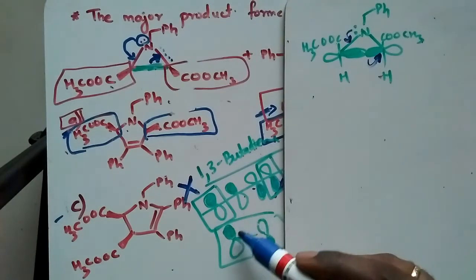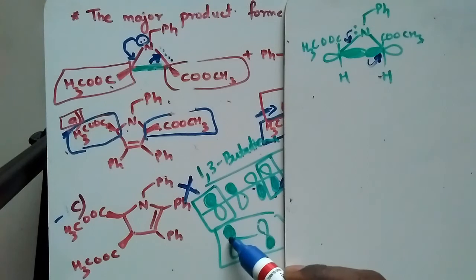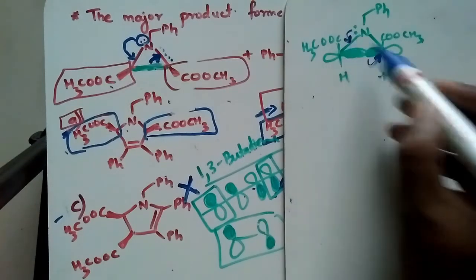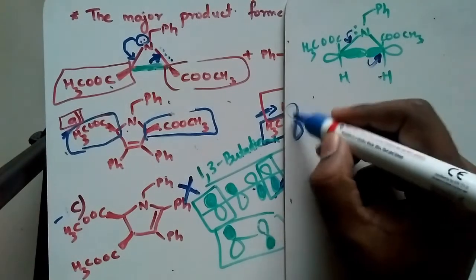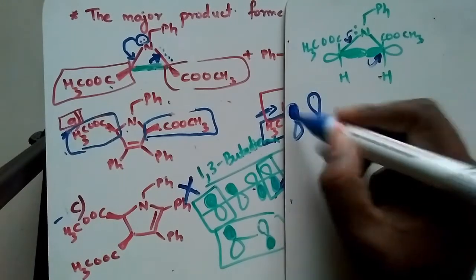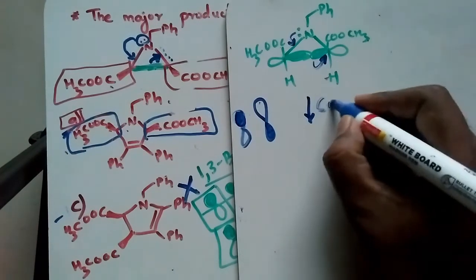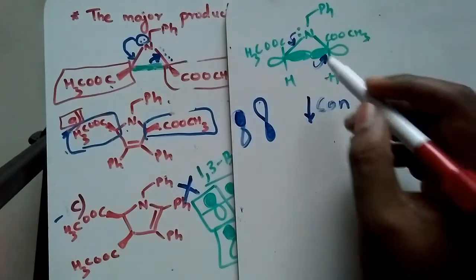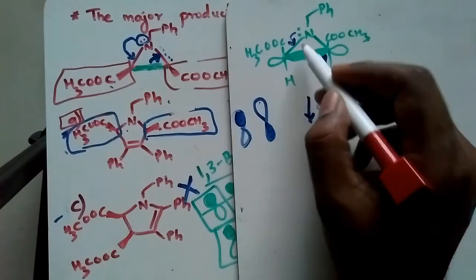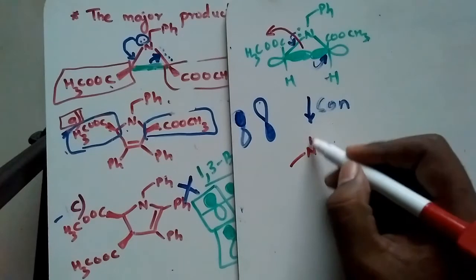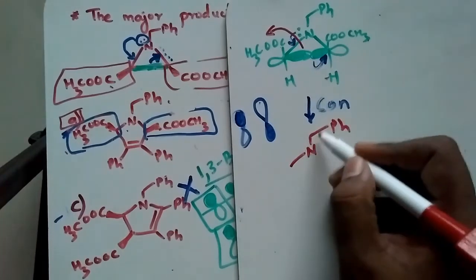When you open up the ring, the end lobes should look like this: one positive phase above and one positive phase down. To achieve this — one phase above and one phase down — we have to do conrotatory motion. So that is a conrotatory motion.